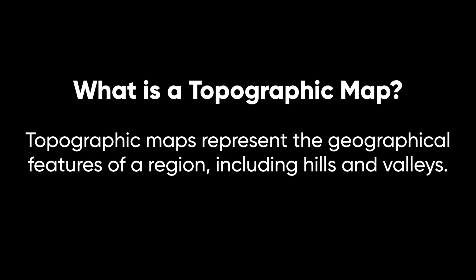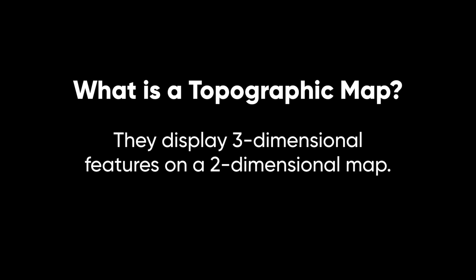The first question we want to answer is, what exactly is a topographic map? Well, a topographic map represents a region, and it shows all of the geographical features of that region, including three-dimensional features like hills and valleys. The ultimate goal of a topographic map is to display these three-dimensional features with ups and downs and cliffs and slopes, rivers and streams, all of these three-dimensional features, but on a flat two-dimensional map.